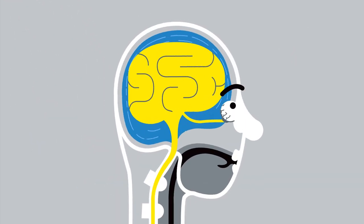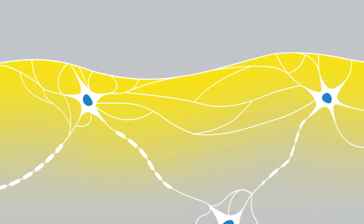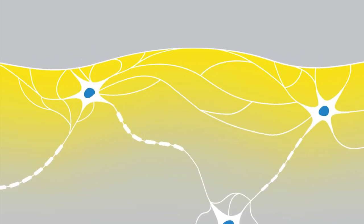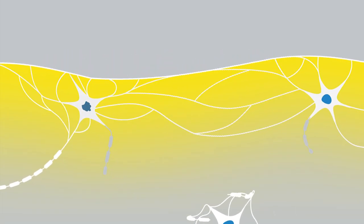This rotational motion can cause axons, which are critical to normal brain function, to stretch and become damaged. Doctors and scientists believe that this kind of axonal strain is responsible for many serious brain injuries.